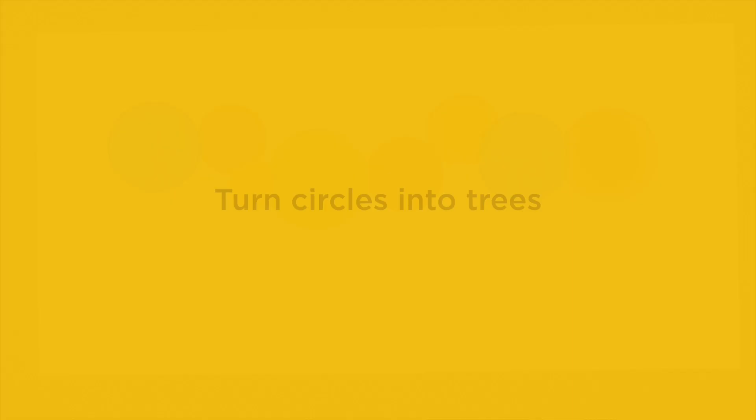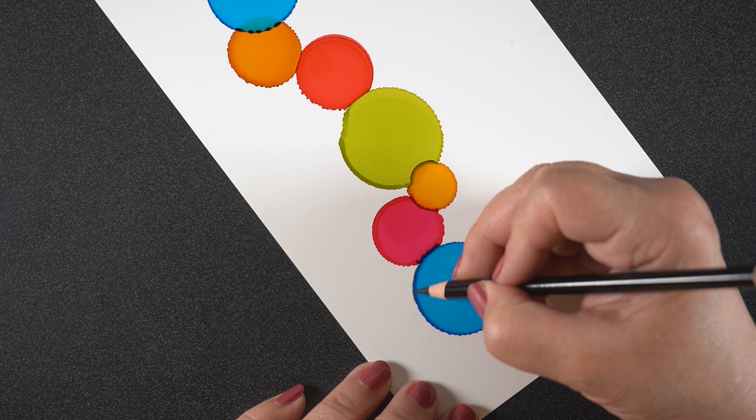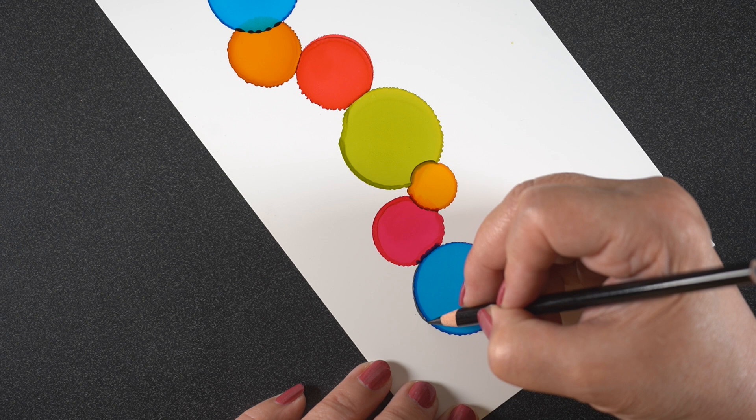Once everything is completely dry, we're going to turn the circles into trees using colored pencils. I'm just going to use a black colored pencil here. Very simple, and this one is by Prismacolor, but you can also use Polychromos or most others. Cheaper pencils may not work as much if they're not as pigmented. I'm going to go around the edge of all my circles and make a nice thick line, which is more than just one pencil line going around it.